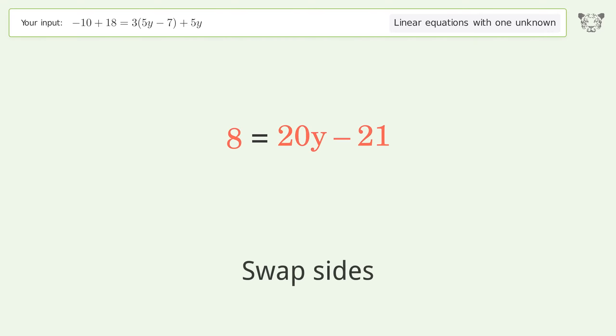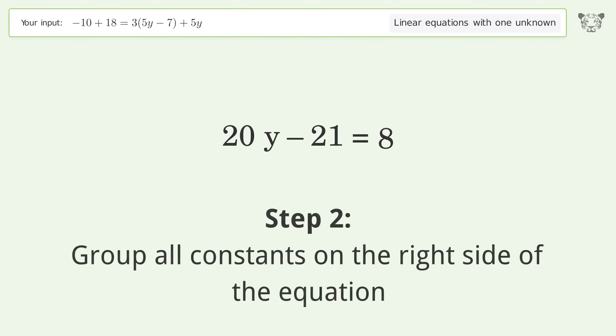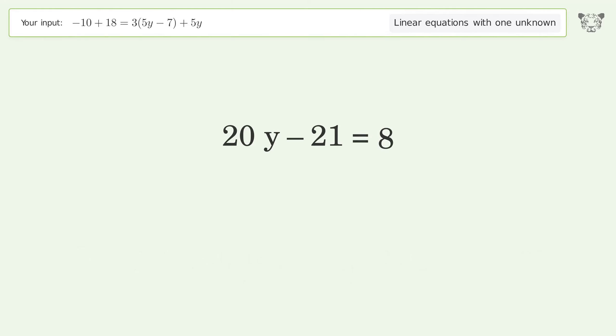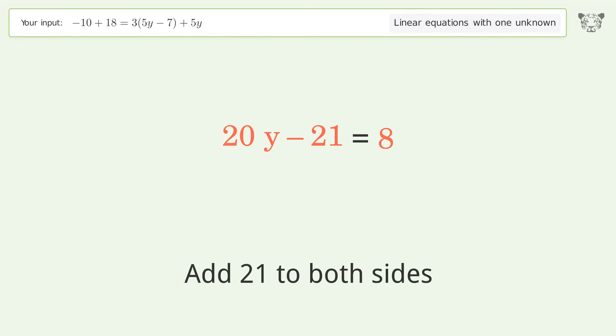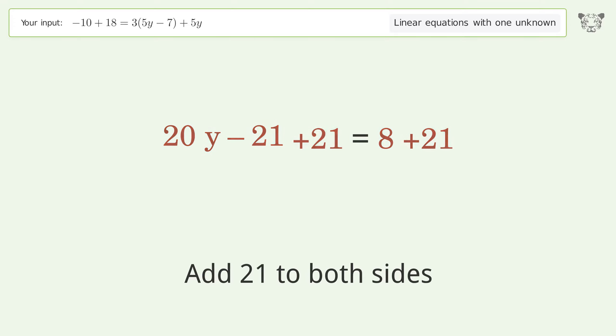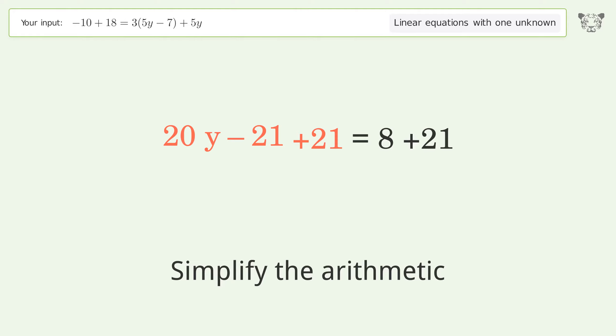Swap sides. Group all constants on the right side of the equation. Add 21 to both sides. Simplify the arithmetic.